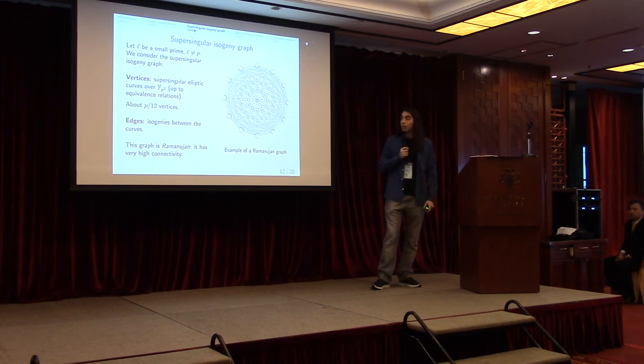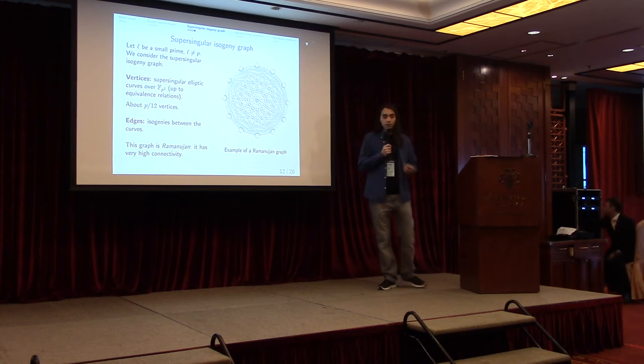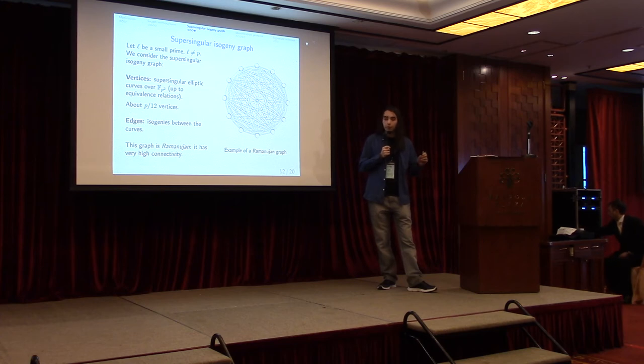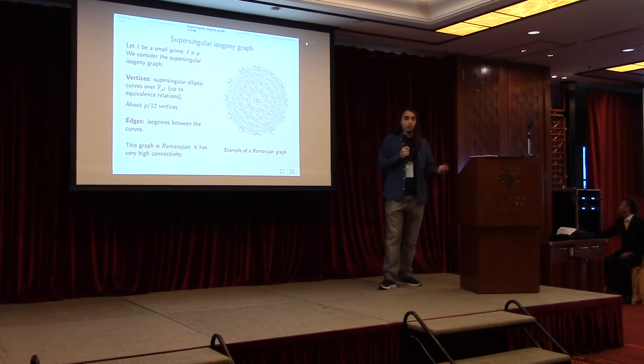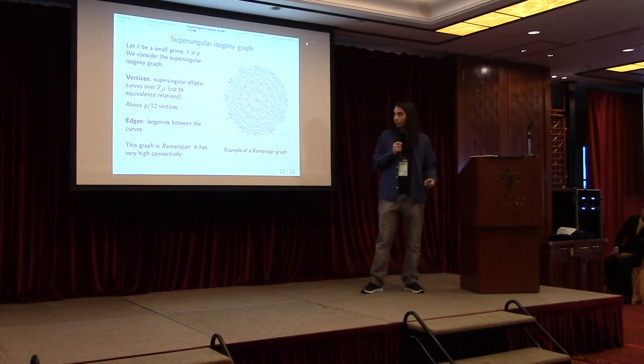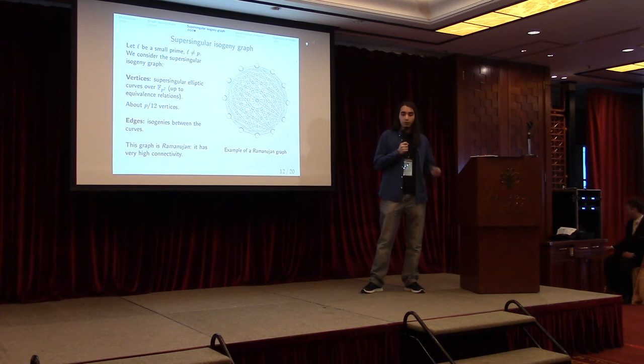And finally, what is this supersingular isogeny graph? Essentially we take all the isogenous supersingular elliptic curves over F_p^2 for a very large prime p, up to some equivalence relation. But that doesn't matter now - just think of the vertices as the supersingular elliptic curves, and the edges will be the isogenies between these curves, the functions between them. This graph has a very nice property, it's called a Ramanujan graph, which essentially means it has lots of edges between the vertices, it has lots of connectivity, and it is easy to start from one point, from one vertex in the graph, and reach any other point in very few steps.